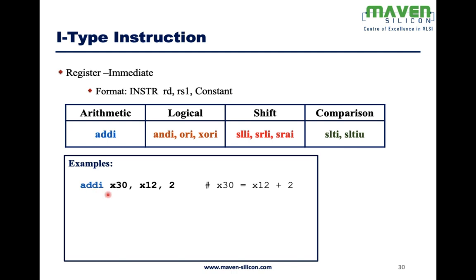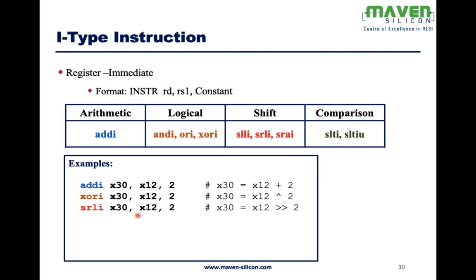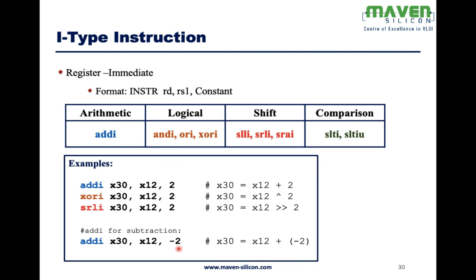For example, ADDI X30, X12, 2 means X30 = X12 + 2. XORI X30, X12, 2 means X30 = X12 XOR 2. SRLI — shift right logical immediate — means X12 is right-shifted by 2. We can also do subtraction through addition by using a negative constant in 2's complement. For example, ADDI X30, X12, -2 computes X30 = X12 + (-2), effectively performing subtraction.